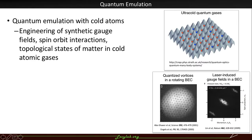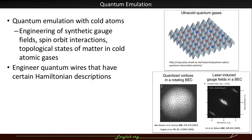Here you see these quantized vortices in rotating BECs showing the engineering of these synthetic gauge fields. And so we want to do something similar and try and engineer quantum wires that have certain Hamiltonian descriptions.